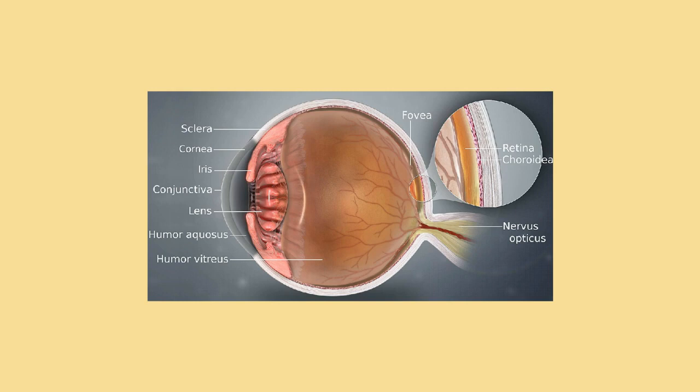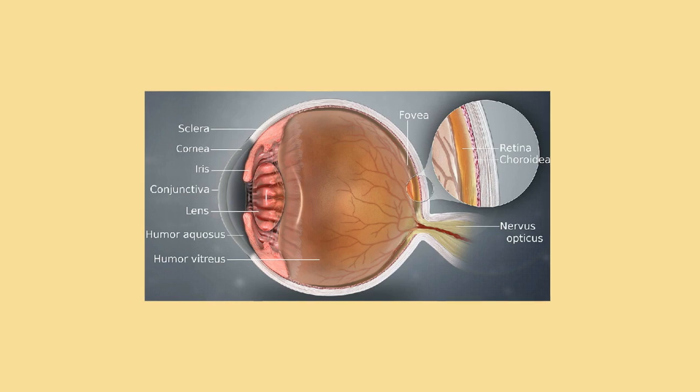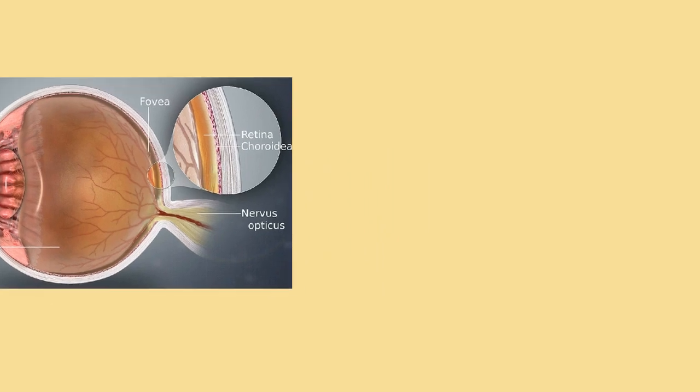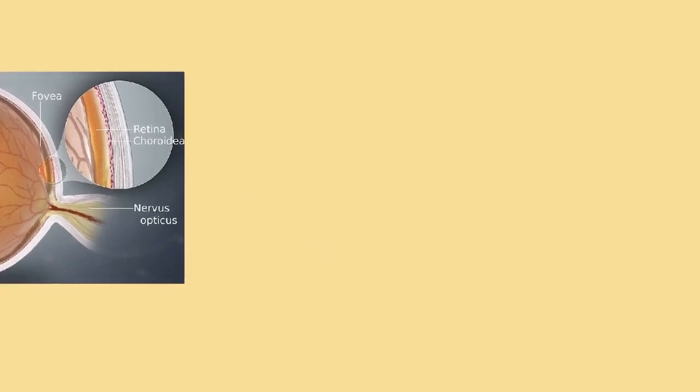The entrance pupil is typically about 4 mm in diameter, although it can range from 2 mm (f/8.3) in a brightly lit place to 8 mm (f/2.1) in the dark. The latter value decreases slowly with age. Older people's eyes sometimes dilate to not more than 5 to 6 mm in the dark, and may be as small as 1 mm in the light.